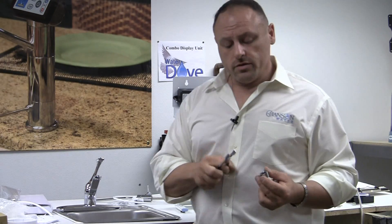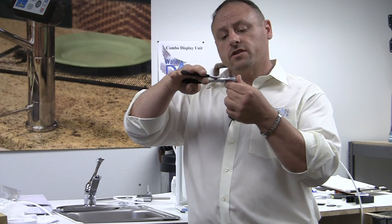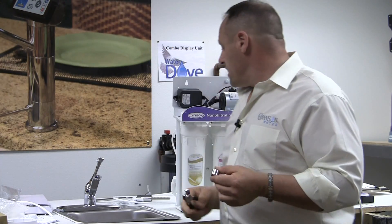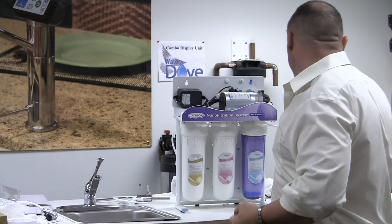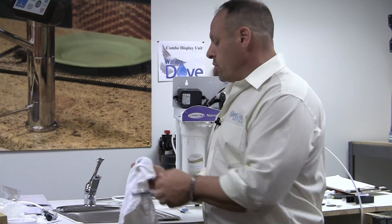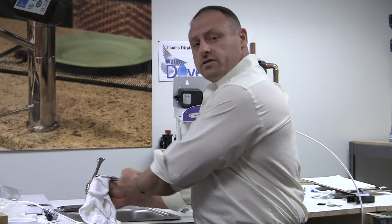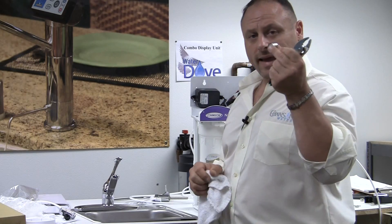One thing you don't want to do is put a pliers like this on a chrome finish like this because all you're going to do is scratch and damage it. So if you can't get it off by hand, what I recommend is you get yourself a washcloth or a rag, something like this, put it around the piece, and then clamp your pliers and loosen it a little bit to where you can loosen it by hand.